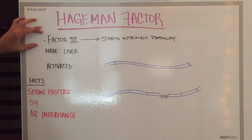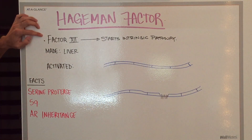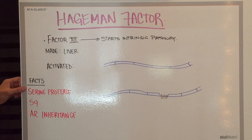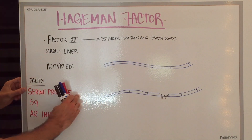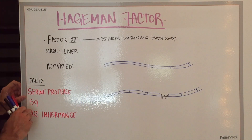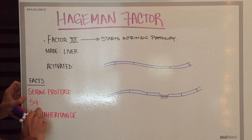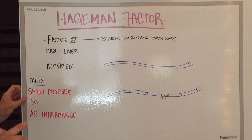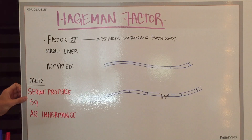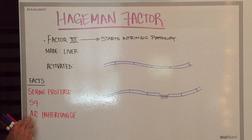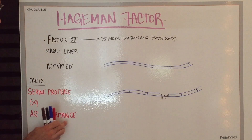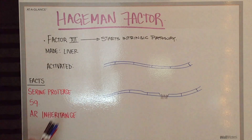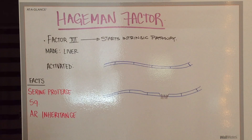Factor 12, like many of the other factors, is a serine protease. It's found on the fifth chromosome on the Q arm, which means that Cri-du-chat syndrome does not affect it, and it has an autosomal recessive inheritance pattern, which is pretty significant for those who have it.